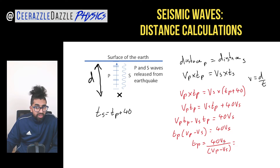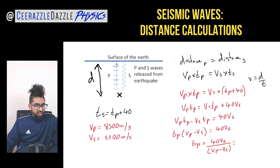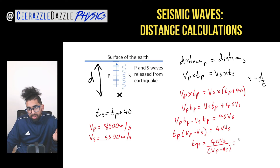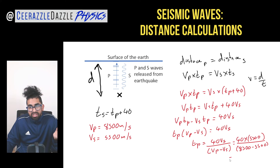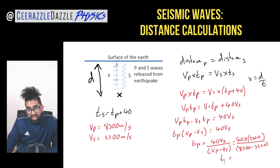Let's work out the time taken for the P wave. The velocity of the primary wave is 8500 m/s and the velocity of the secondary wave is 5500 m/s — these would be given in the question. Note that Vp is higher because it arrives first. Substituting into the formula: Tp = (40 × 5500) ÷ (8500 − 5500), giving Tp = 73.3 seconds.